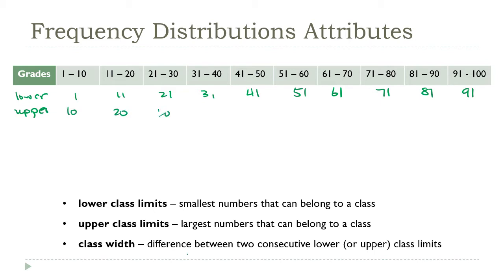Then the corresponding upper limits, those would just be the greatest values. So that's 10, 20, 30, and so on, going all the way up to the top class where the upper class limit is 100.